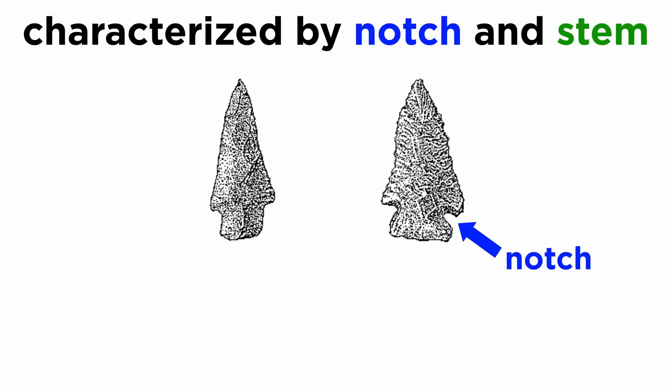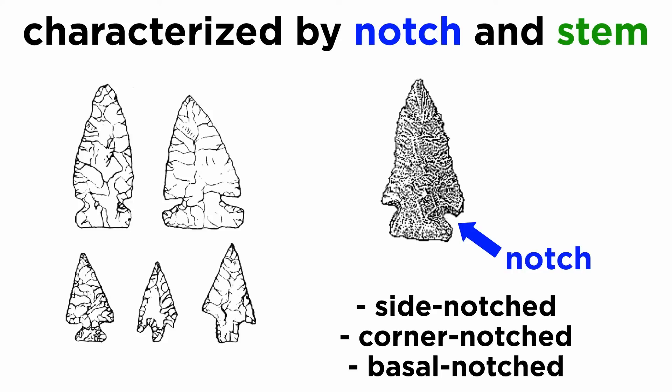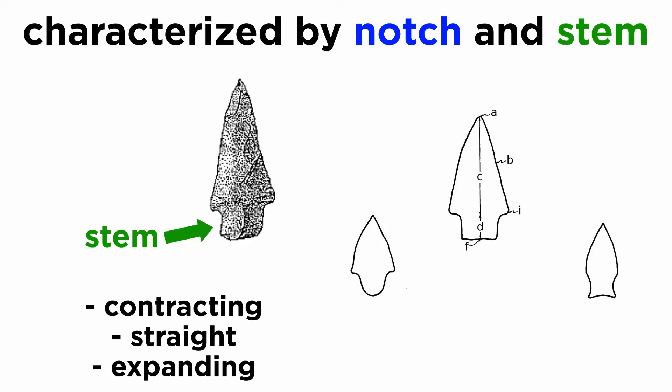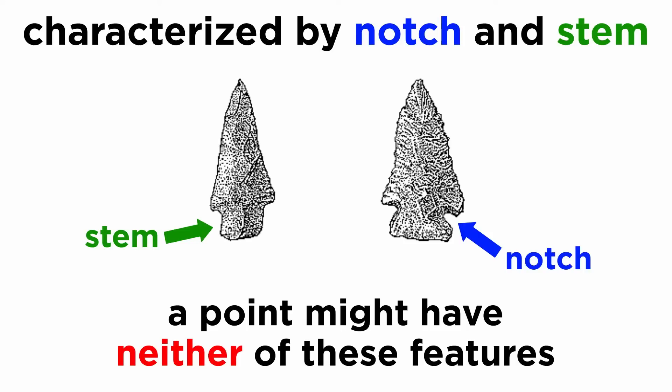The notch refers to large grooves near the base of a projectile point where it was tied to the shaft. Where this notch is on the point can be described as well, dividing them into groups like side-notched, corner-notched, and basal-notched. Stemmed points can be identified by a skinny extension of material on the base of the point. A stem can be described as being contracting, straight, or expanding. It's also possible that a point has neither a notch nor a stem, and this is an important descriptive characteristic for projectile points.